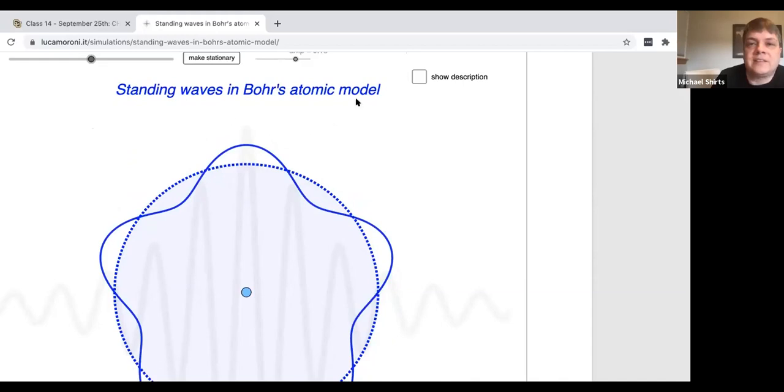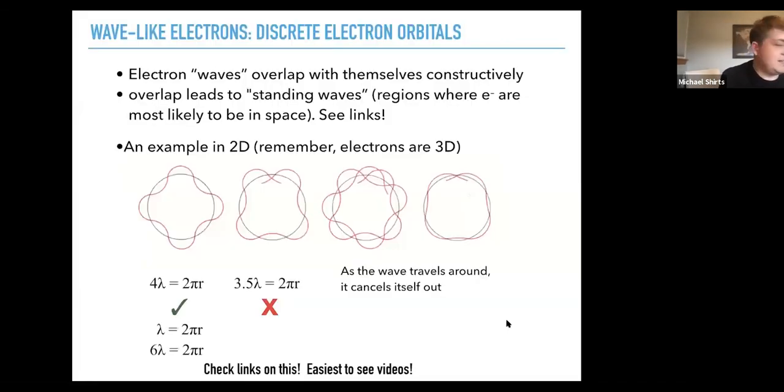So let's take a look at the math here. So in this case, the wavelength, this would also work for the wavelength being 2πr or six times the wavelength equals 2πr, you have to have n times the wavelength equals 2πr.